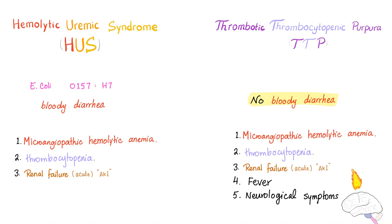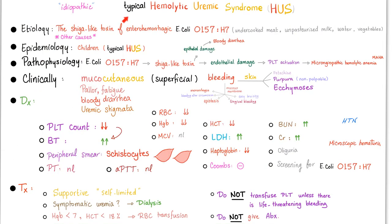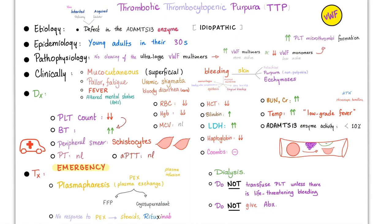Thrombotic thrombocytopenic purpura has no bloody diarrhea and has a pentad: microangiopathic hemolytic anemia, thrombocytopenia, renal failure, fever, and neurological symptoms. Remember, typical HUS was just a triad. And here's TTP.